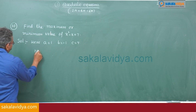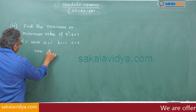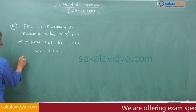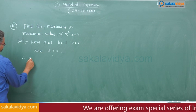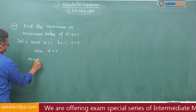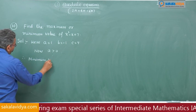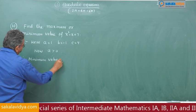Now the sign of x square coefficient a is greater than 0. So therefore, it is minimum. The minimum value of the expression is equal to...